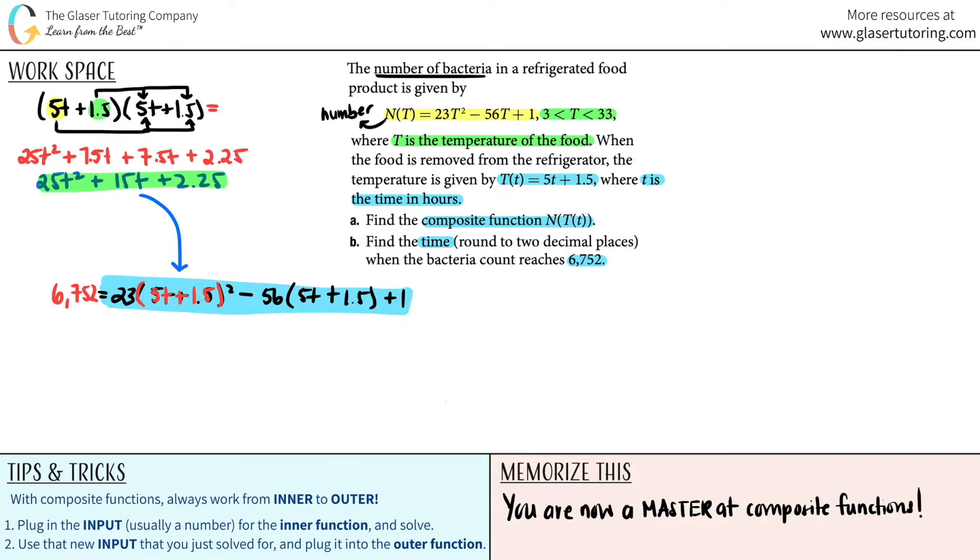When you do that, it equals 25t² + 7.5t + 7.5t + 2.25. If I summarize this, it's 25t² + 15t + 2.25. That is all being put into this, so now that's all being multiplied by 23. This is distributive property, this has to be multiplied by this, by this, by this.